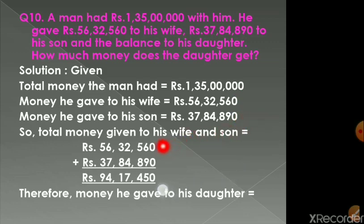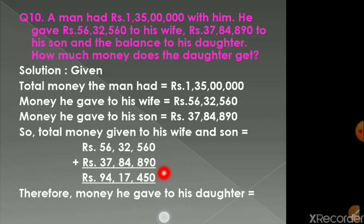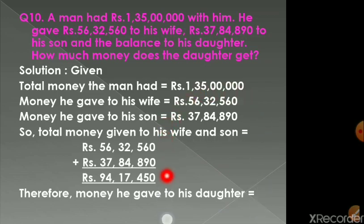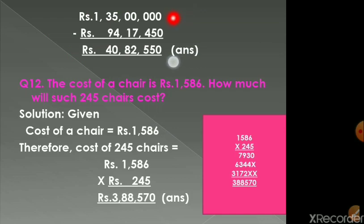To find the total amount given to his wife and son, we add: 56,32,560 plus 37,84,890 equals 94,17,450. The balance is given to his daughter, so from 1,35,00,000 we subtract 94,17,450. The answer is rupees 40,82,550, which he gives to his daughter.